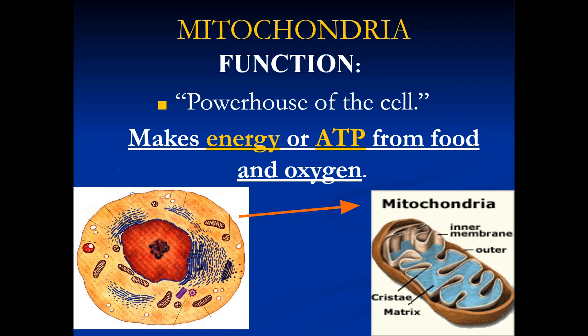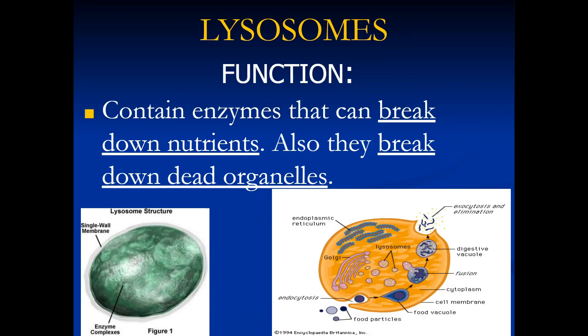The mitochondria is found in many places of the cell and makes energy, or ATP, from food and oxygen for the cell. Lysosomes contain enzymes that can break down nutrients, and they also break down dead organelles.